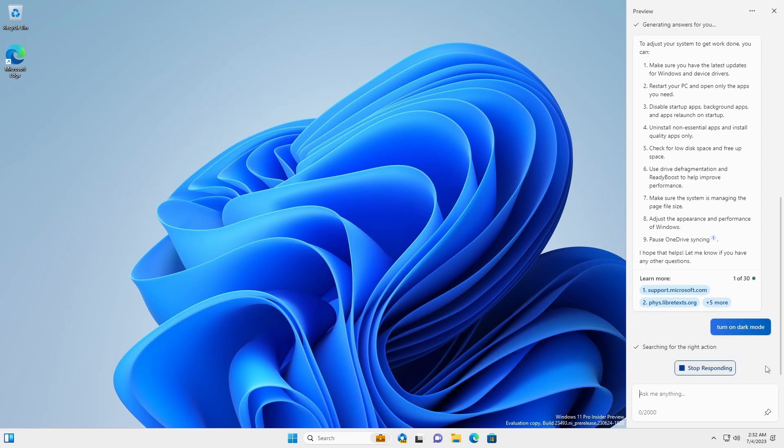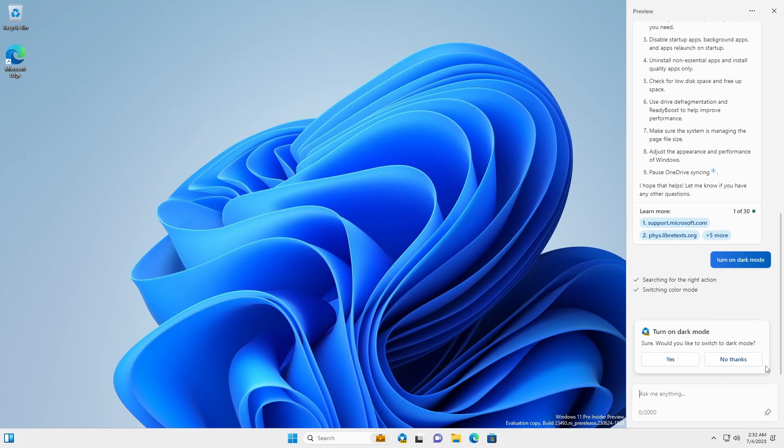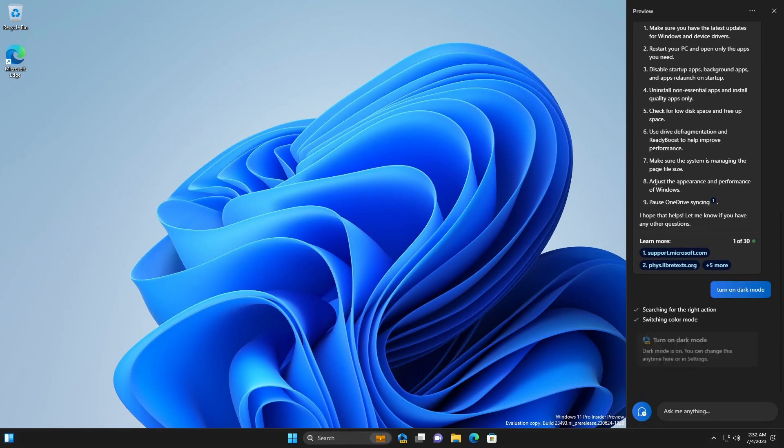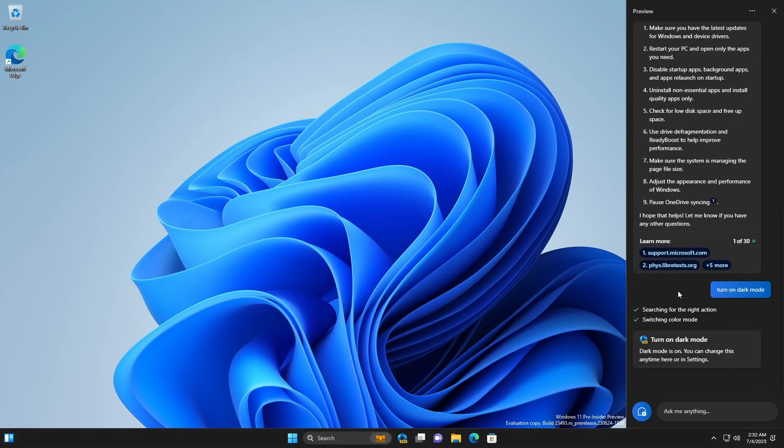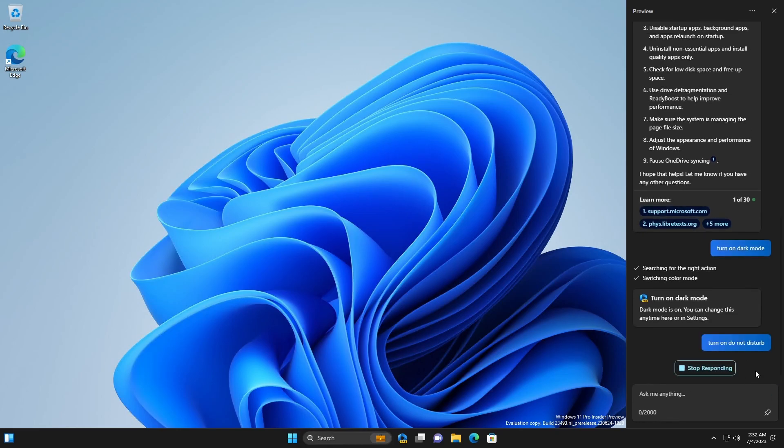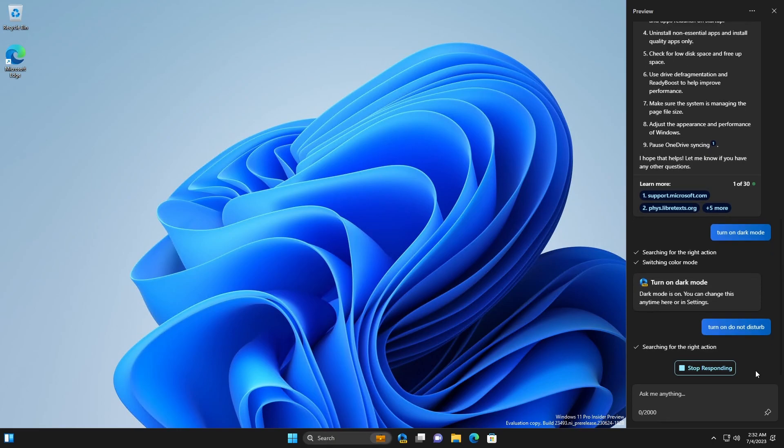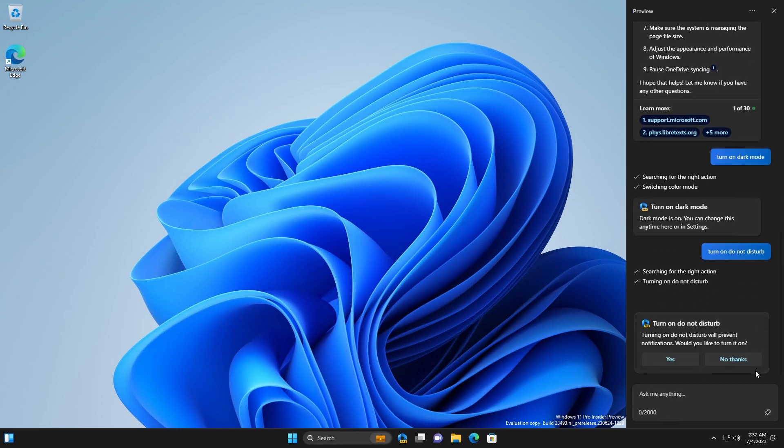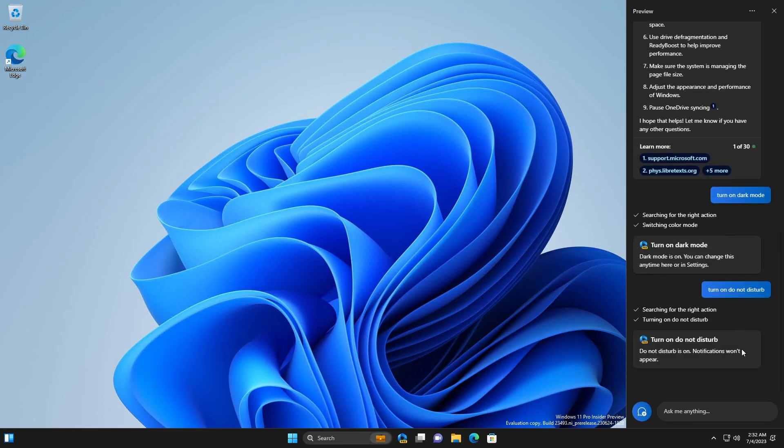So we're going to turn on dark mode. And it finds the right action. You see how this is behaving a little bit differently to how it behaved on the first prompt. And we're going to say yes, turn on dark mode. And then everything changes to dark mode. And it can do other things like turn on do not disturb. And you can see it's found the right action. I'm going to say yes, and it's going to turn on do not disturb. So those are a couple of things that it can do right now. And obviously it's confined in this window.